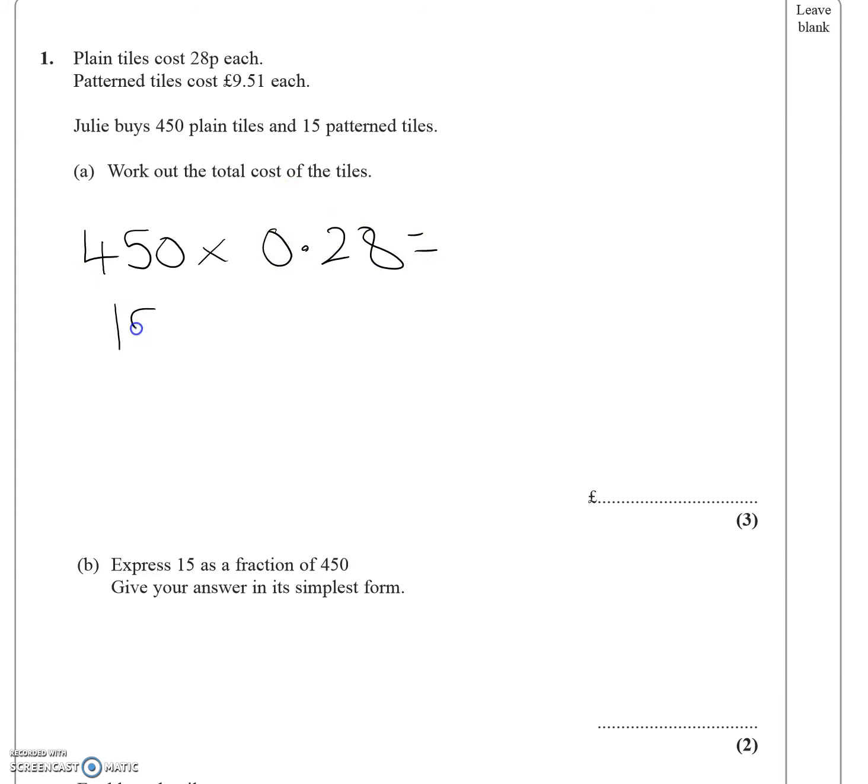And she's buying 15 pattern tiles at £9.51 each. And if we do both of those two calculations, 450 times 0.28 gives me £126, and 15 times £9.51 gives me £142.65.